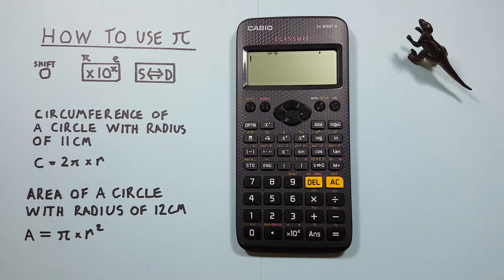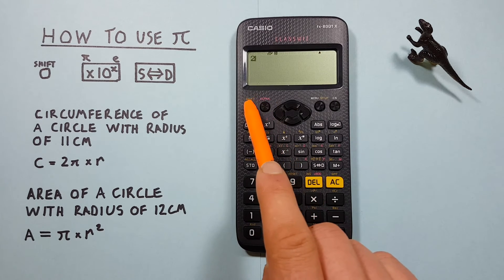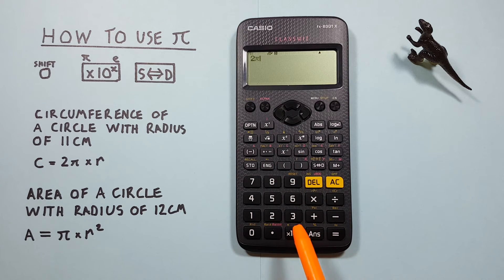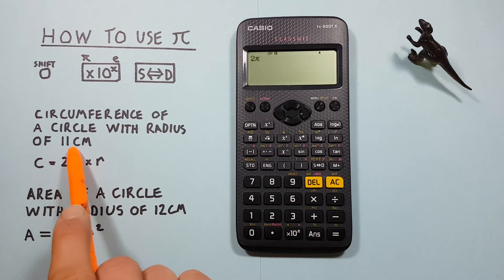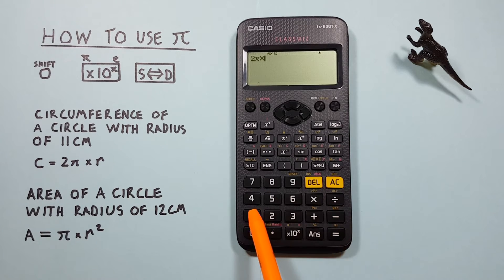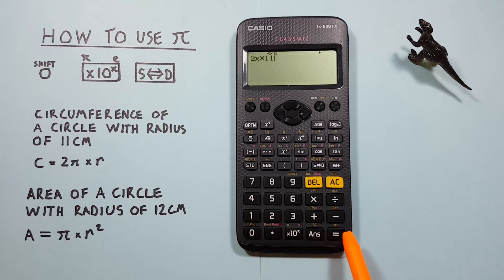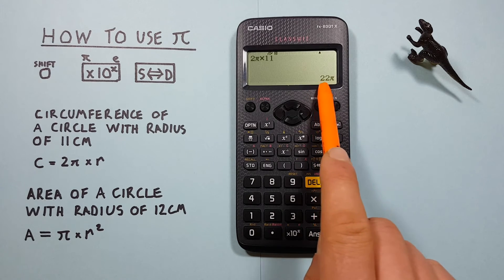To enter that on our calculator we just press the 2 and then the shift times 10 to the power of X key. There we go, 2 PI. And then times R. Well our radius is 11, so times 11. And press equals. And we see this gives us a result of 22 PI.